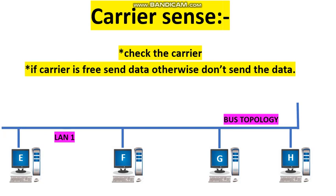The problem with carrier sensing is that any station cannot sense the entire carrier. E can sense the carrier only at station E, F only at station F, G only at station G, and H only at station H. So by sensing the carrier at their own location, the stations cannot identify whether the entire carrier is free or not, which means sometimes collisions may occur.